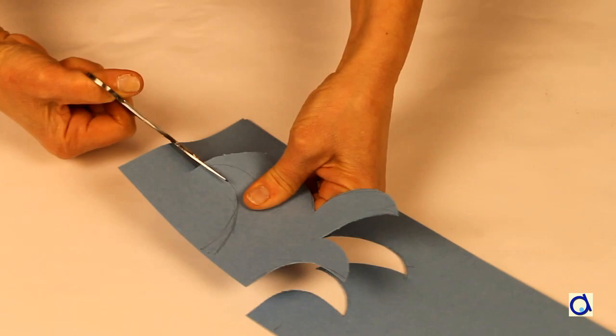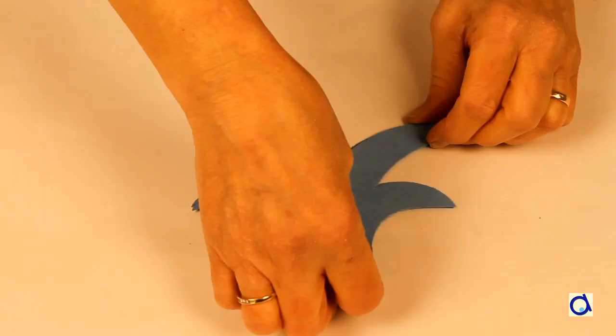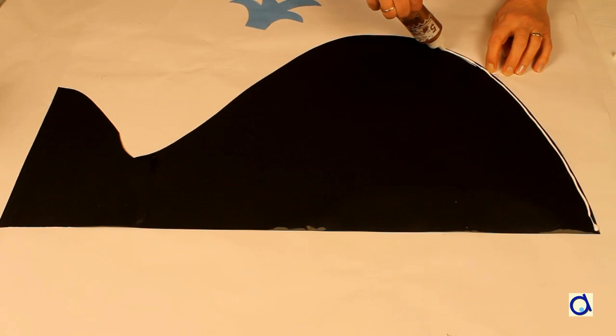To represent the spray of water that whales emit from a hole at the top of their head, draw it on blue construction paper. Cut two layers and glue them to one another so that it will remain vertical when it is glued to the whale.